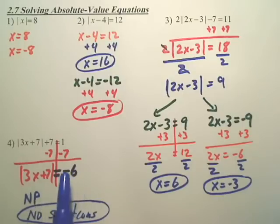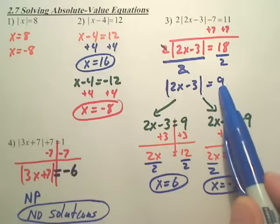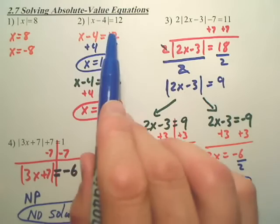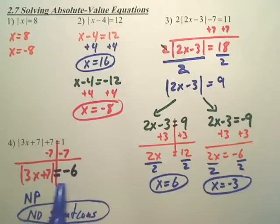So be careful. Before you start, if you're, for instance here, if that was a negative 9, you stop. You can't solve it. If this right here was a negative 12, you couldn't solve it. Anytime you have an absolute value equal to a negative, you stop, you can't solve it.